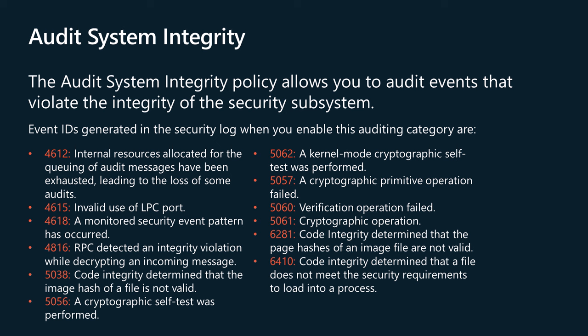The Audit System Integrity policy allows you to audit events that violate the integrity of the security subsystem. Activities that violate the integrity of the security subsystem include the following: audited events are lost due to a failure of the auditing system; a process uses an invalid local procedure call (LPC) port in an attempt to impersonate a client, reply to a client address space, read to a client address space, or write from a client address space; a remote procedure call (RPC) integrity violation is detected; a code integrity violation with an invalid hash value of an executable file is detected; cryptographic tasks are performed. Violations of security subsystem integrity are critical and could indicate a potential security attack.